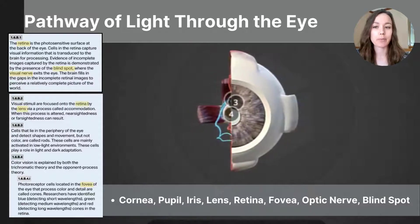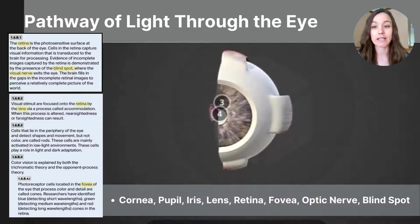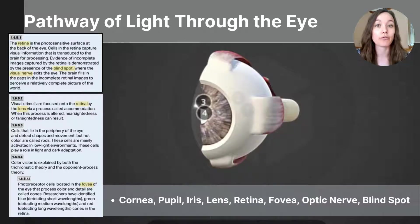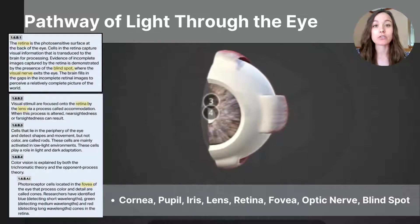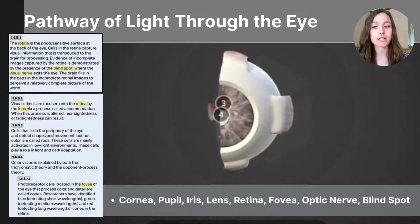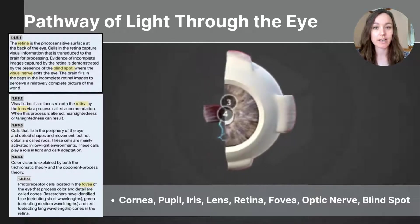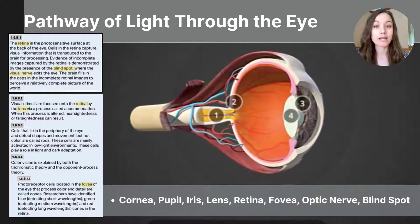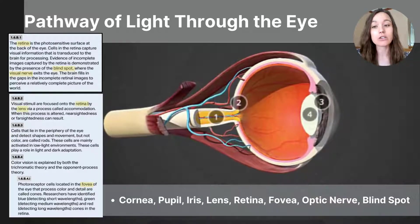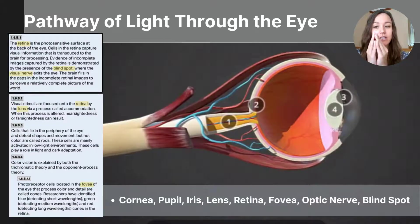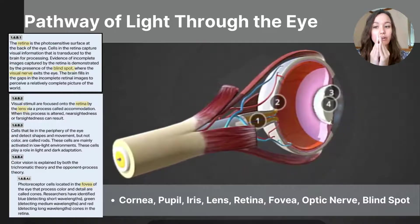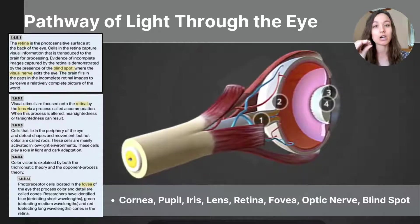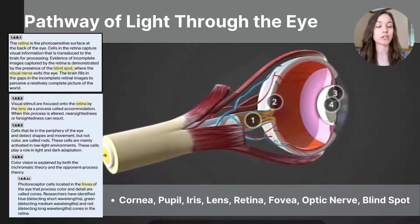From the pupil, the light passes through the lens, which is labeled with the number four on our 3D model. The lens is transparent and flexible, located just behind the iris and pupil. The lens continues to focus the light by changing its shape, becoming thicker and thinner to help focus on objects at different distances.